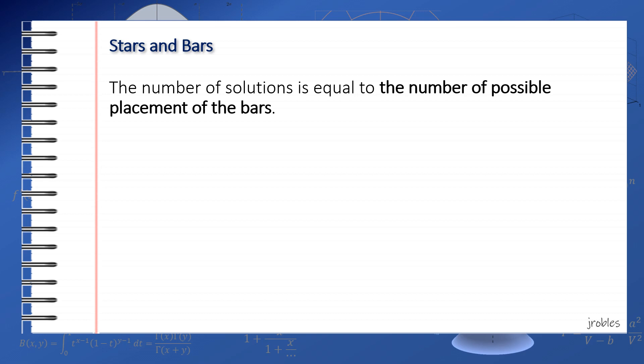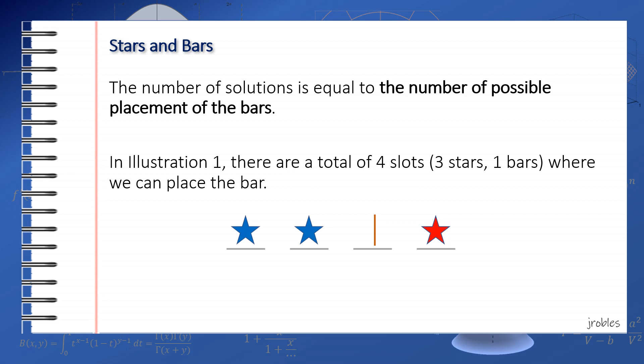So the question that stands now is, how do we count the number of placements of the bars? In illustration 1, we can place the bars in 4 slots. Why 4 slots? Because although we are looking at the number of placements of bars, we also have to put the stars somewhere. Since we have 3 stars and 1 bar, 4 slots are needed overall. By the idea of combinations, the total number of ways we can place 1 bar in 4 slots is equal to C(4,1), which is 4.